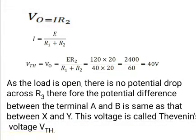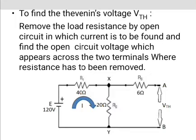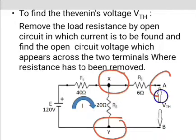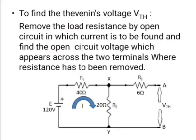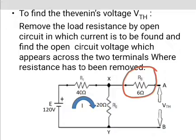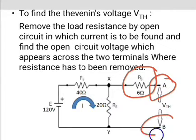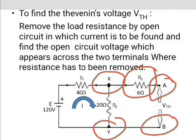As the load is open, there is no potential drop across R3. Therefore, the potential difference between the terminals A and B is the same as that between X and Y. This voltage is called Thevenin's voltage, that means VTH.